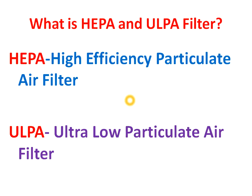First of all, HEPA means High Efficiency Particulate Air filter, and ULPA means Ultra Low Particulate Air filter. Now we will see the basic difference between the HEPA and ULPA filters.